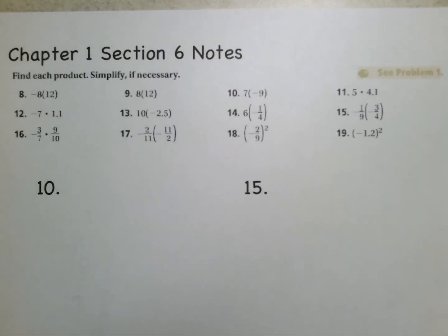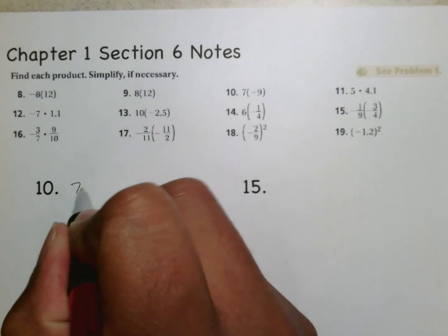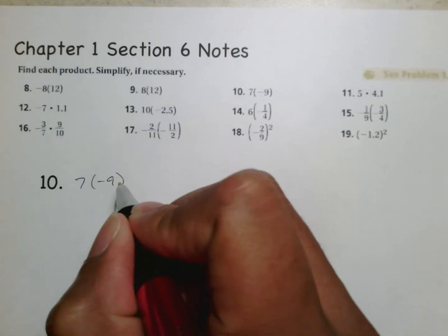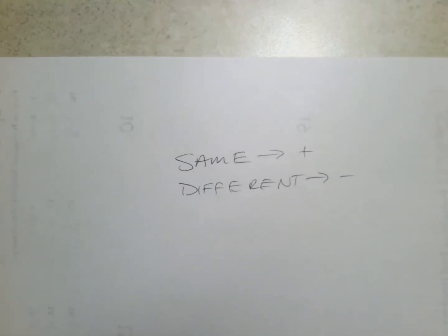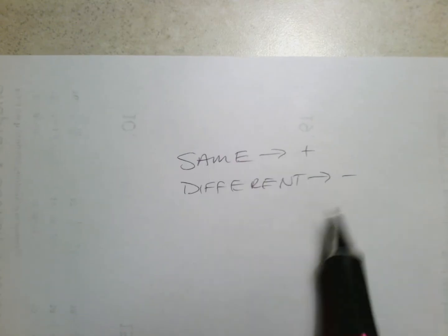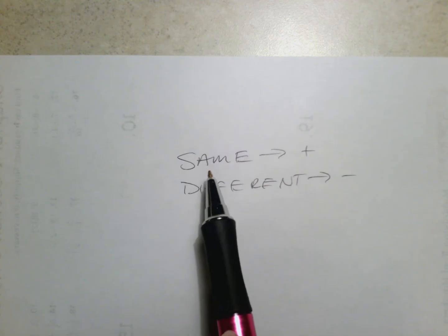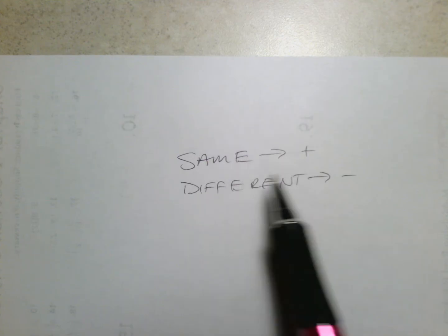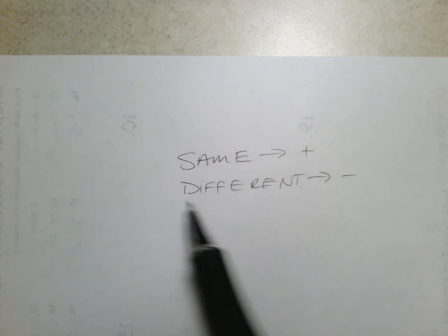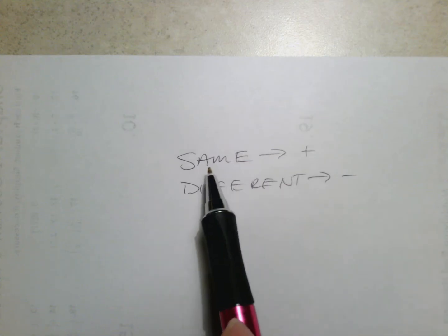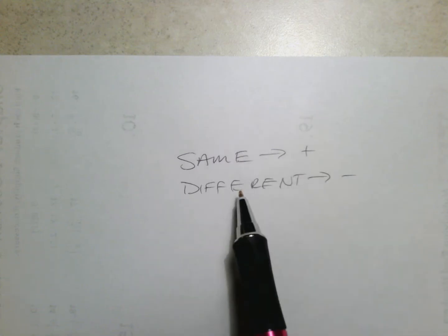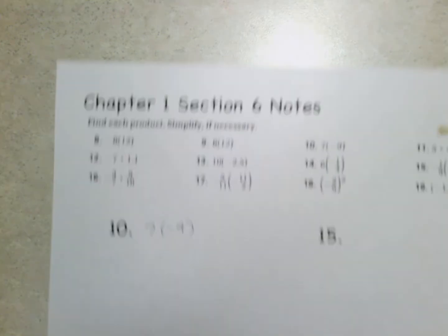These are the notes for Chapter 1, Section 6: the multiplication of integers. We did an introductory activity on this Friday. What it was all about was taking our addition properties and adjusting them a little bit. In addition and subtraction of integers, if the signs are the same we add, if the signs are different we subtract. We can use the same idea here: if the signs are the same, your answer is positive; if the signs are different, your answer is negative.